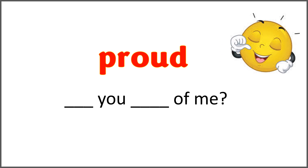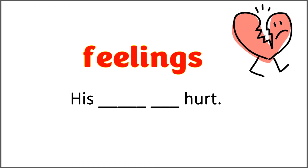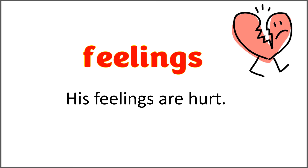The given word is 'proud,' and the sentence is 'blank you blank of me?' Use the word 'proud' with 'are' to complete this sentence. Are you proud of me? The given word is 'feelings.' Use the word 'feelings' with 'are' to complete this sentence: 'his blank blank hurt.' His feelings are hurt. That's sad.